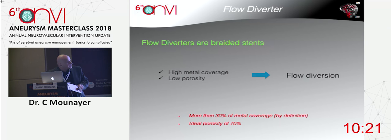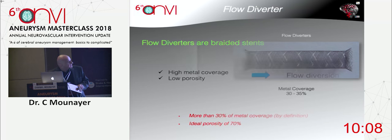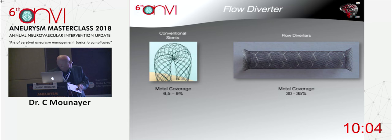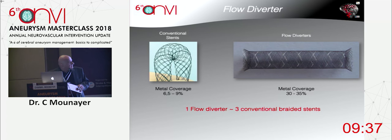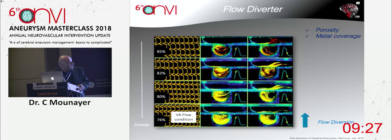Flow diverters are braided stents with high metal coverage and low porosity — this is what creates flow diversion. Flow diversion is defined as a stent with more than 30% metal coverage, and the ideal porosity is 70%. The metal coverage is much higher in flow diverters compared to conventional stents. One flow diverter is equivalent to about three braided stents — for example, the Silk from Balt Company is three layers in telescopic shape.